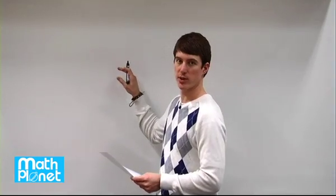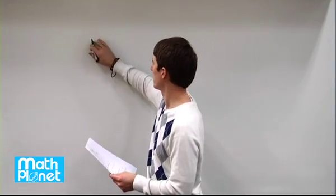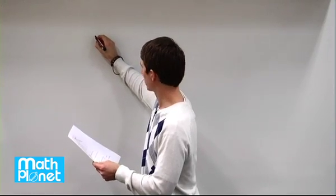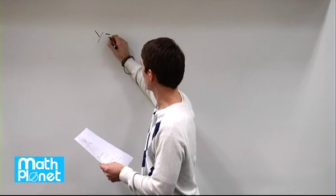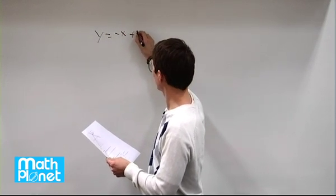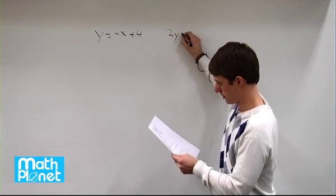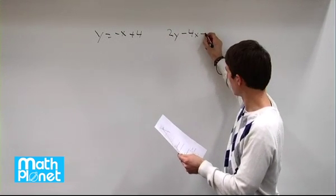Here we have the same two equations as the last problem, but here we want to just explicitly solve algebraically from the beginning. So we still have y equals negative x plus 4, and then we had 2y minus 4x equals 2.